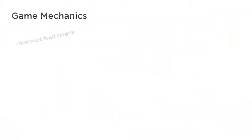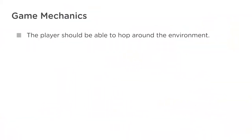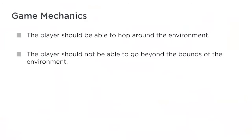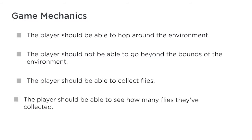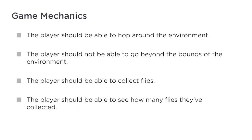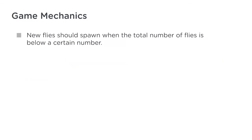For now, we know that we have a few big mechanics we need to write code for. The player should be able to hop around the environment. The player should not be able to go beyond the bounds of the environment. The player should be able to collect flies, and the player should be able to see how many flies they've collected. New flies should spawn when the total number of flies is below a certain number.